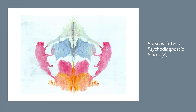People often express relief about card eight, which lets them relax and respond effectively. Similar to card five, it represents a change of pace. However, the card introduces new elaboration difficulties, being complex as the first multicolored card in the set. Therefore, people who find processing complex situations or emotional stimuli distressing or difficult may be uncomfortable with this card. Popular responses included four-legged animals — virtually everyone, over 93%, focused on the pink shapes.